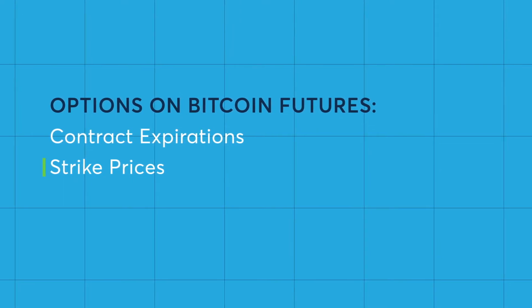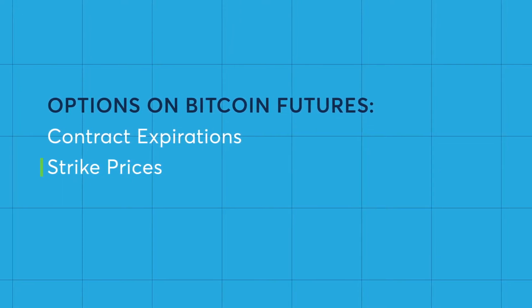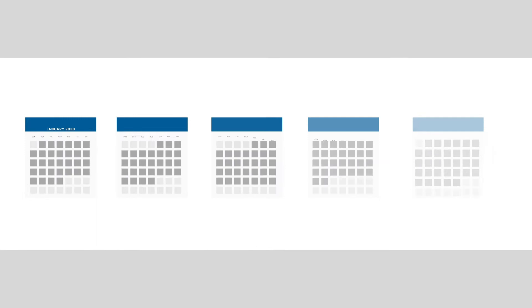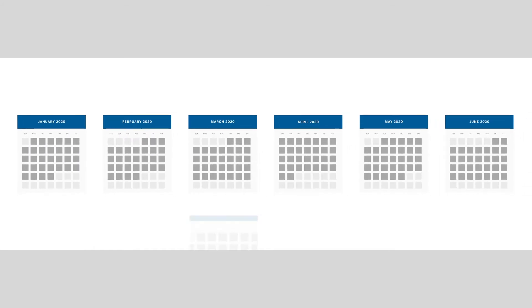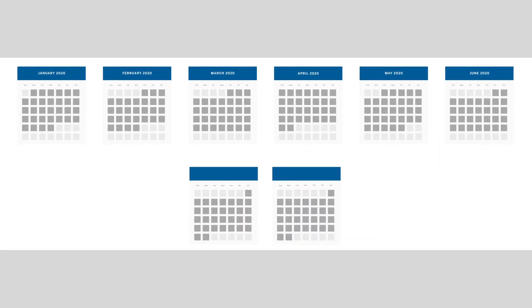First, let's look at the contract expirations. CME Group will list six consecutive months of options on Bitcoin futures. Also, there will be two December options contracts. However, if the current year's December contract is one of the front six consecutive listings, there will be only one additional December listing.